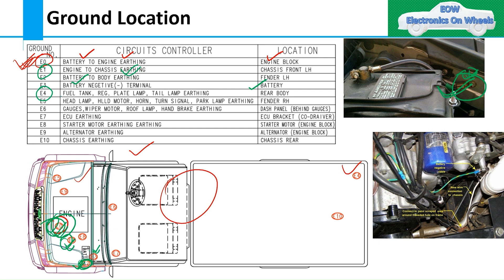E4 is the ground given for the fuel tank, the registration lamp at the back, and the tail lamp — those components use E4 earthing. Then you have E6, which is for the wiper motor, roof lamp, and handbrake. E6 is in the cockpit area, or the instrument panel and cluster area, under the dash panel. E7 is the fuse earthing located on the fuse bracket on the co-driver side.